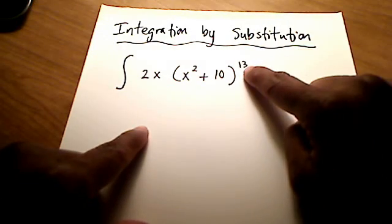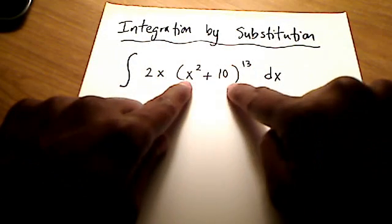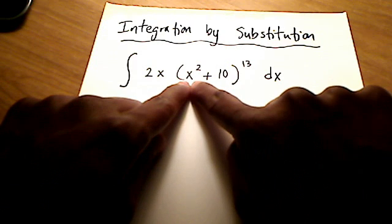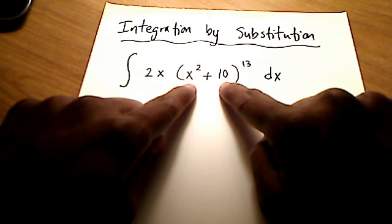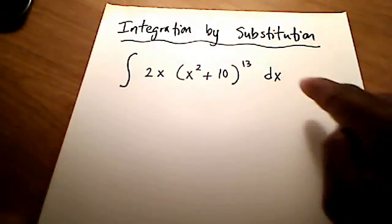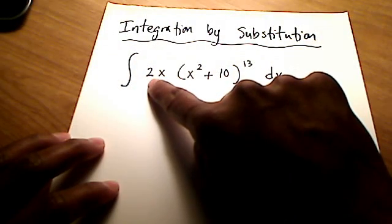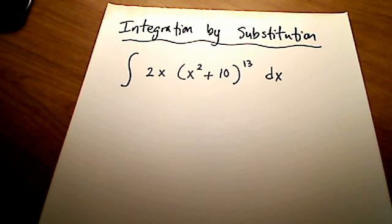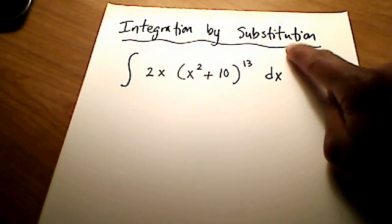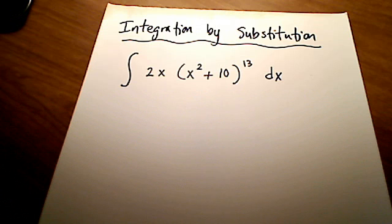But since that 13 is there, we're not going to work this out. We're not going to multiply x squared plus 10 times itself 13 times, that's ridiculous. And then multiply it all by 2x and keep going, it's too much. So there's this really cool concept called integration by substitution, and I'm going to show you how that works right now.